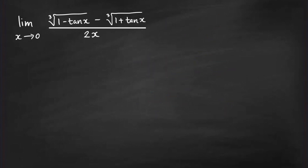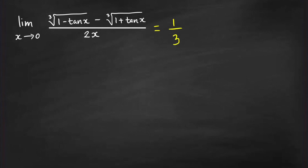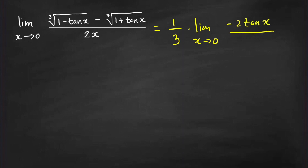Now let's move to the fourth problem. We want to find the limit of this expression as x goes to 0. What is tangent of 0? Tangent of 0 equals 0. So the numerator will go to cube root of 1 minus cube root of 1, which is 0. We still have indeterminate form 0 over 0. As x goes to 0, tangent x goes to 0, so we can still apply our technique. We remove the radical symbols, putting here 1 over 3 — the power of (1 minus tan x) and (1 plus tan x) — and take the limit of the expression without the radical. Removing the radicals gives (1 minus tan x) minus (1 minus tan x), which gives minus 2 tan x all over 2x.